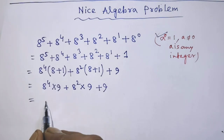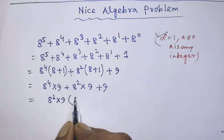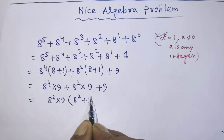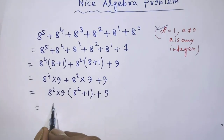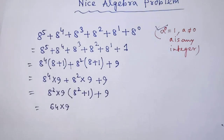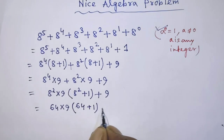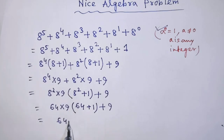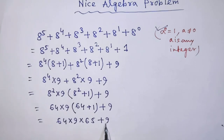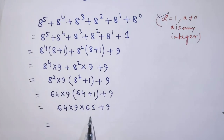We can write from the first two terms: 8 to the power 2 times (8 to the power 2 plus 1) plus 9. That gives us: 64 times 9 times (64 plus 1) plus 9, which becomes 64 times 9 times 65 plus 9.